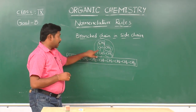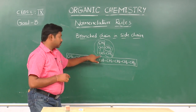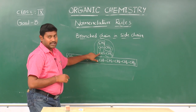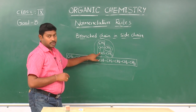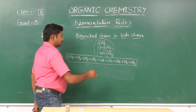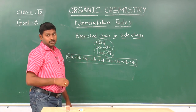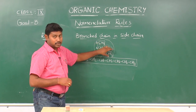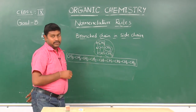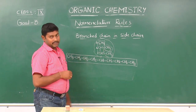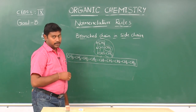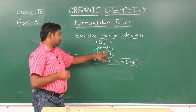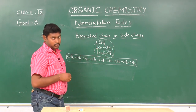Where should we start the numbering? We start from the carbon that is attached to the parent chain or main chain. So the numbering starts from that carbon: 1, 2, and 3. The complex substituent contains 3 carbon atoms and is again branched with 2 methyl groups. These 2 methyl groups are present on the 1st and 2nd carbons of the complex substituent.